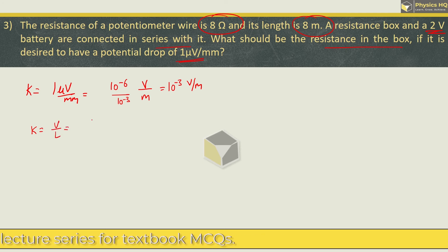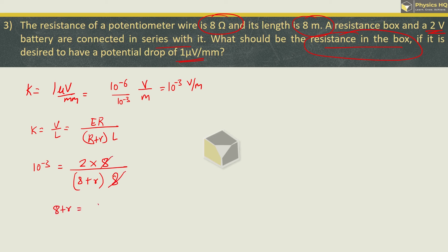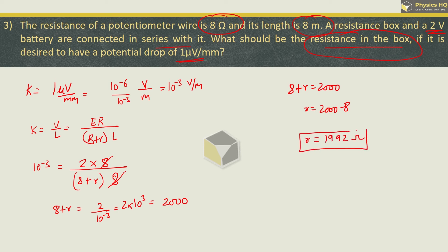Using K = V/L and V = E × R_wire / (R_wire + R_box), we have K = 10⁻³, EMF E = 2 volt, wire resistance = 8 ohm, length L = 8 meter. The 8s cancel, giving us 8 + R = 2 / 10⁻³ = 2000. So R = 2000 − 8 = 1992 ohm. We got the resistance in the box as 1992 ohm.